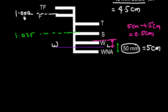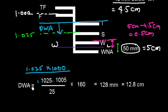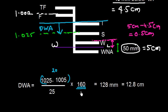If the vessel is in dock water, she is somewhere between fresh and salt water density. When she goes to salt water she rises to the salt water mark — this difference is the dock water allowance. DWA = (1025 − 1005) / 25 × FWA = 20 / 25 × 160 = 128mm = 12.8cm.